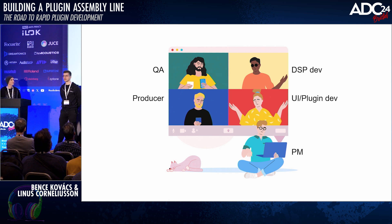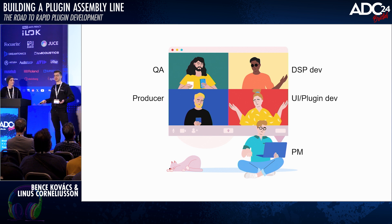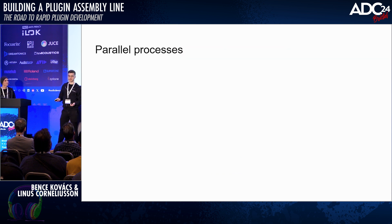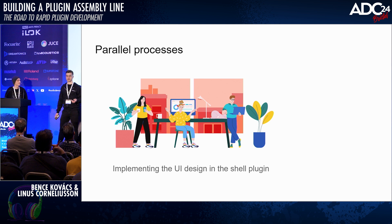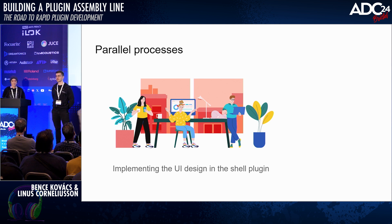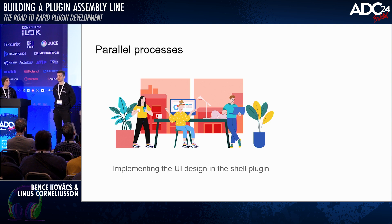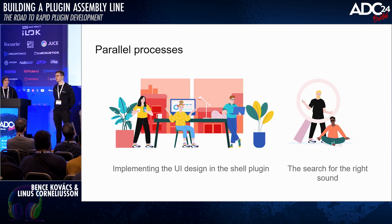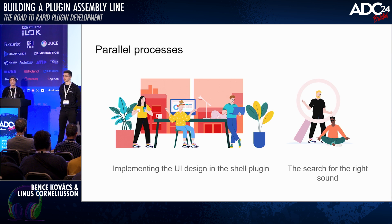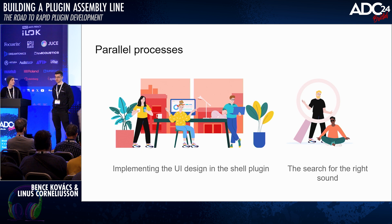We split these people into two different teams and they have two different workflows so they can work in parallel. One part of the team works on what we call the shell plugin, which is basically implementing the UI design and hooking it up to parameters — that's the actual JUCE plugin. And we also have the DSP developer working together with the producer to find the right sounds.